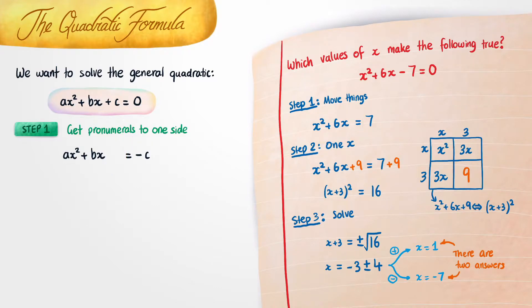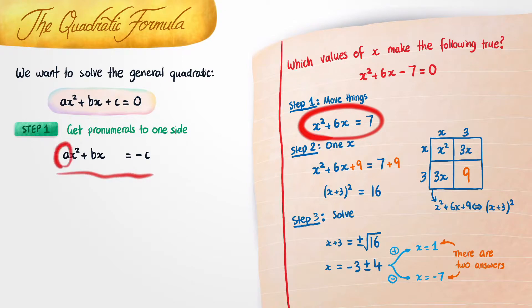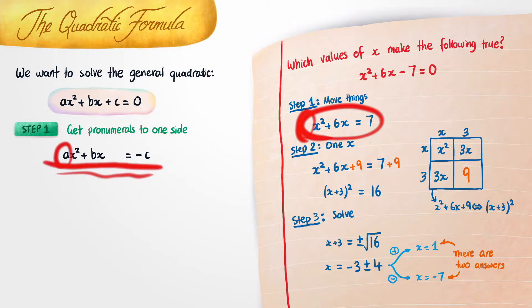However, there is a bit of a difference between this form and the previous one. Namely, in front of the x here we have an a, whereas before there was no a at all. So we're also going to divide all of the terms in this expression by a.